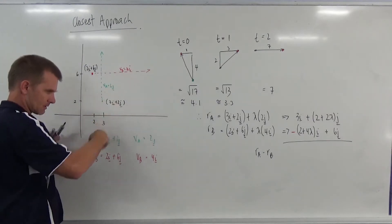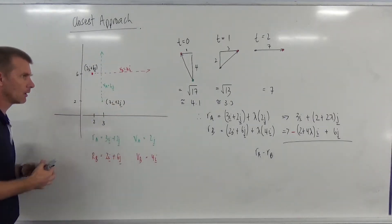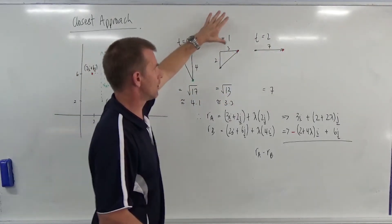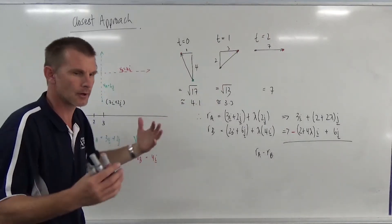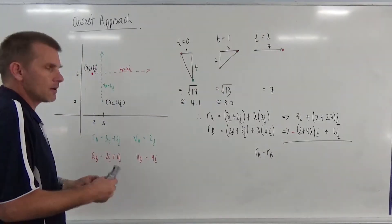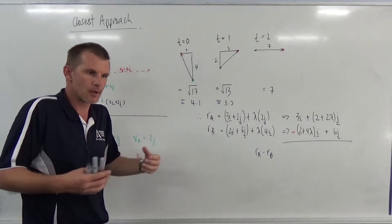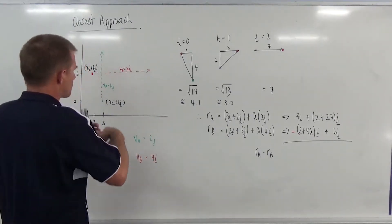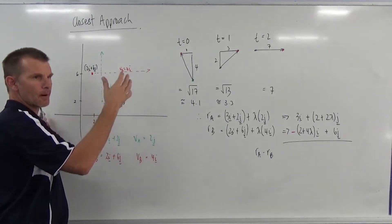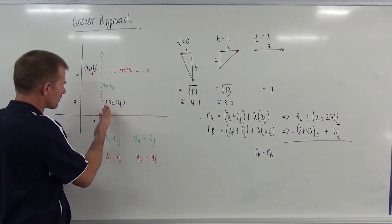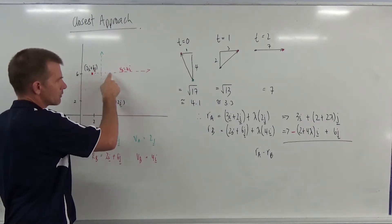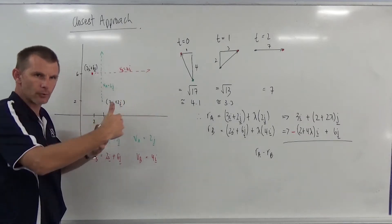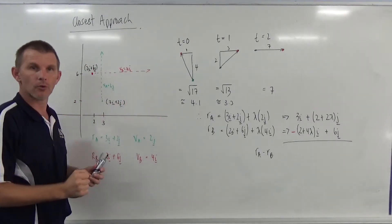Starting here at this point moving this way at this speed, starting here at this point moving this way at this speed - these are the details you get from the question. I'm showing you what's happening at time zero, time one, and time two, because what we're trying to do is find when the closest point is between these two moving particles. In a practical context: if you're playing paintball, running this way and you see someone running that way, at what point should you shoot at them so you're shooting over the smallest distance?